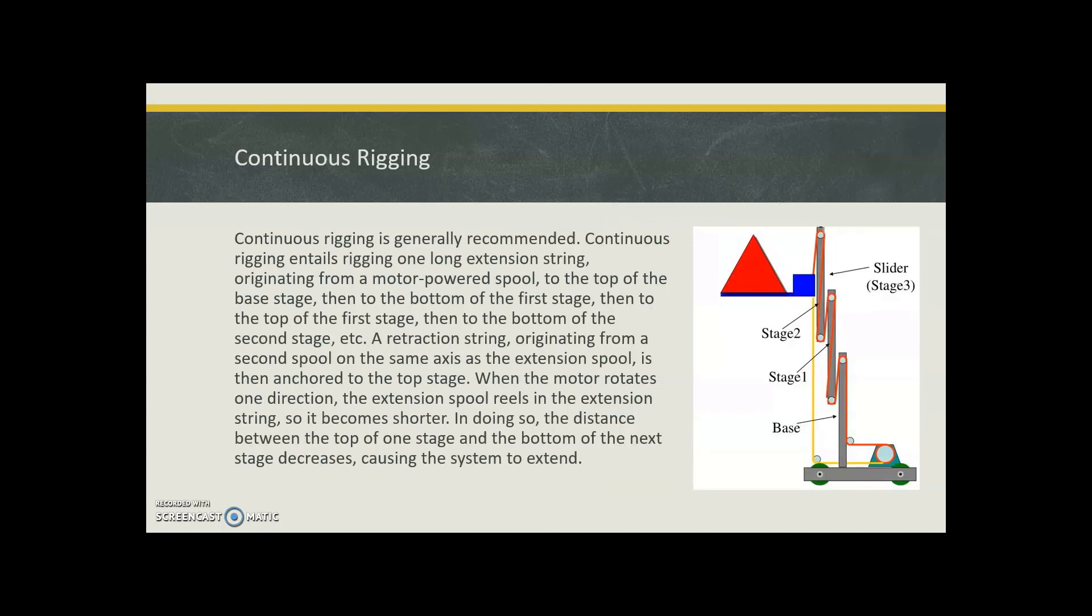Continuous rigging is generally recommended. It entails rigging one long extension string originating from the motor-powered spool to the top of the base stage, then to the bottom of the first stage, then to the top of the first stage, then to the bottom of the second stage, and so on.